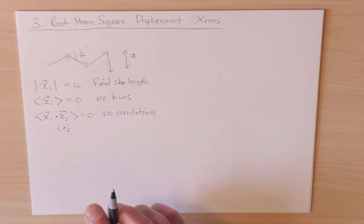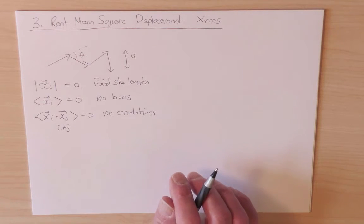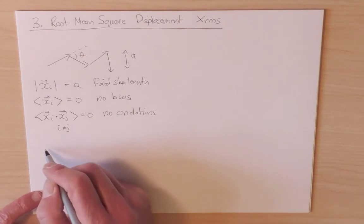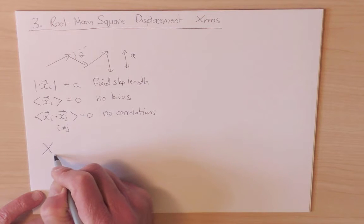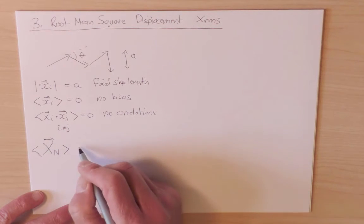So with these assumptions, let's now calculate the mean displacement of a walk after n steps, and the root mean square displacement. So the mean displacement, so I'll denote that by capital X_n, is just the sum of the individual displacements. So we sum from i equals one to n of the little x_i, and we take the average value.